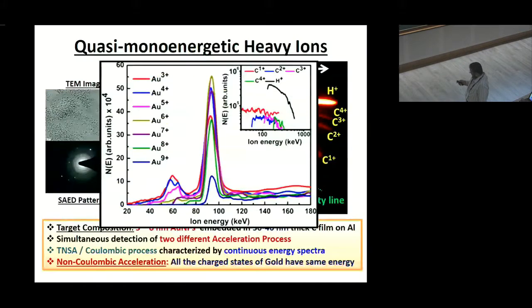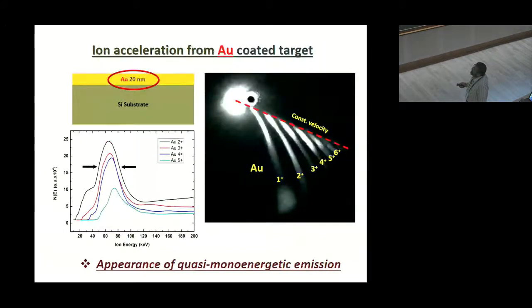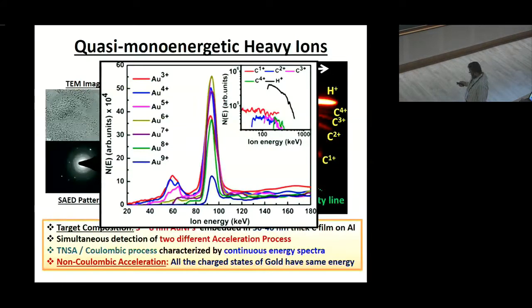Now further we went for a substrate target which is coated with nano-gold particle and embedded in carbon film on silicon substrate. In this case also, we got quite enhanced monoenergetic features all are having same energy. So, these are unconventional, this you cannot get such thing from TNSA mechanism.